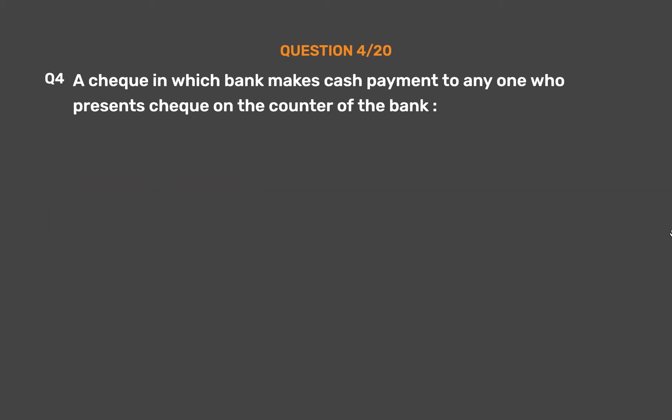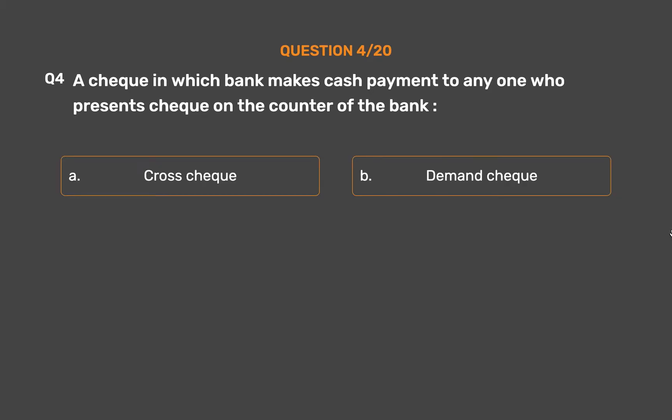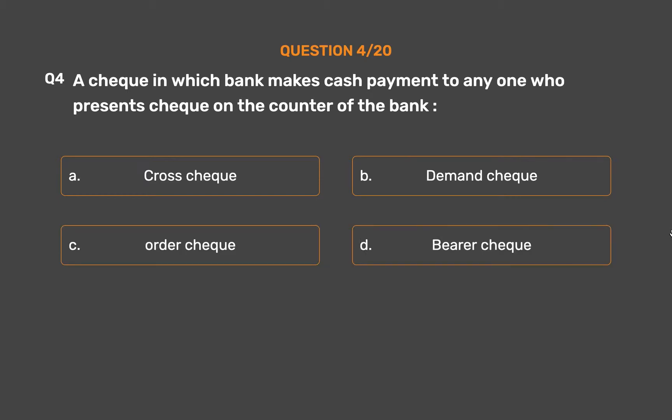Question number four: a check in which the bank makes cash payment to anyone who presents the check on the counter of the bank is called — Option A: cross check. Option B: demand check. Option C: order check. Option D: bearer check.